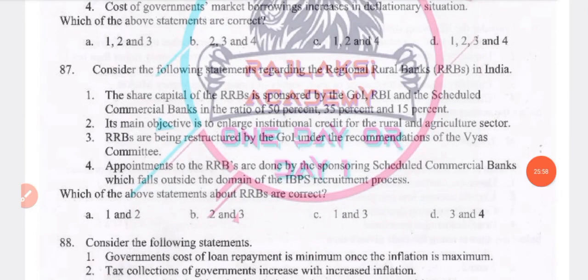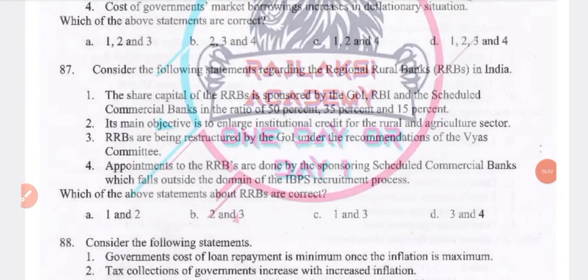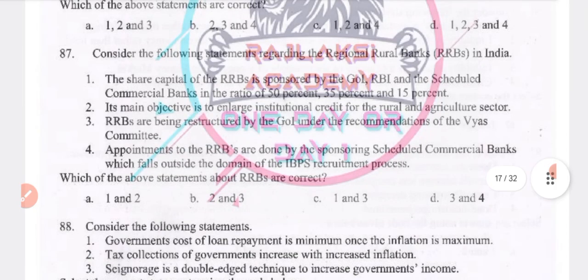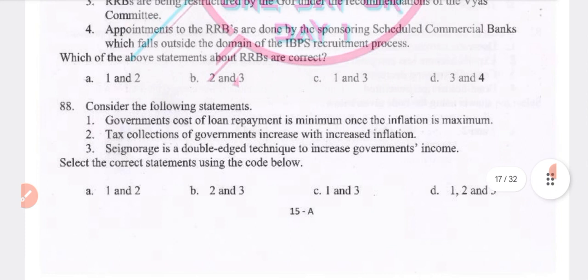Consider the following statements regarding RRBs in India: the share capital of RRBs is sponsored by the Government of India, RBI and Scheduled Commercial Banks in the ratio of 50%, 35% and 15%. The main objective is to enlarge institutional credit for the rural and agriculture sector. RRBs are restructured by the Government of India under the YAS Committee. Answer: statements 2 and 3 are correct.